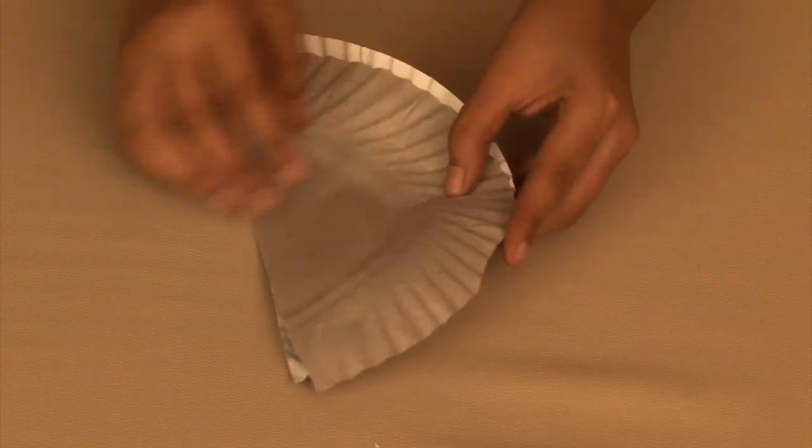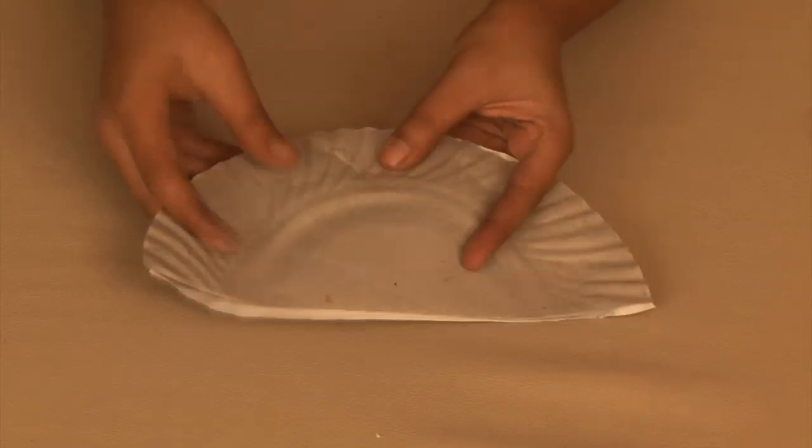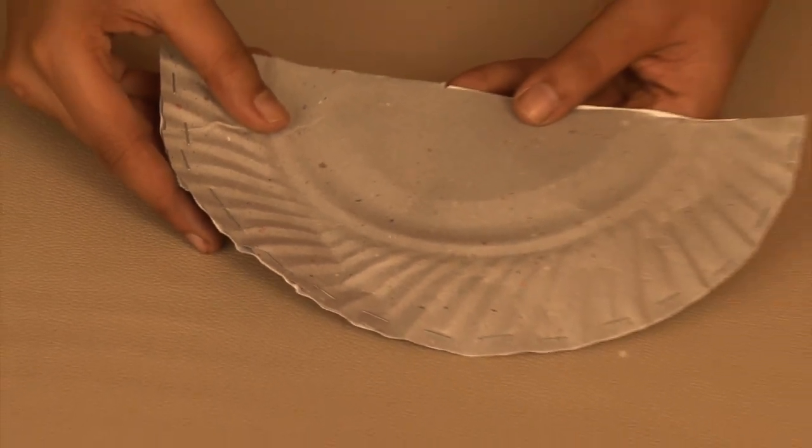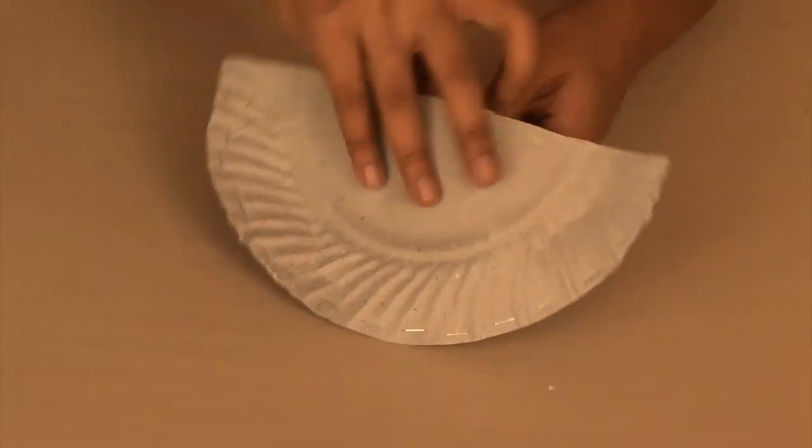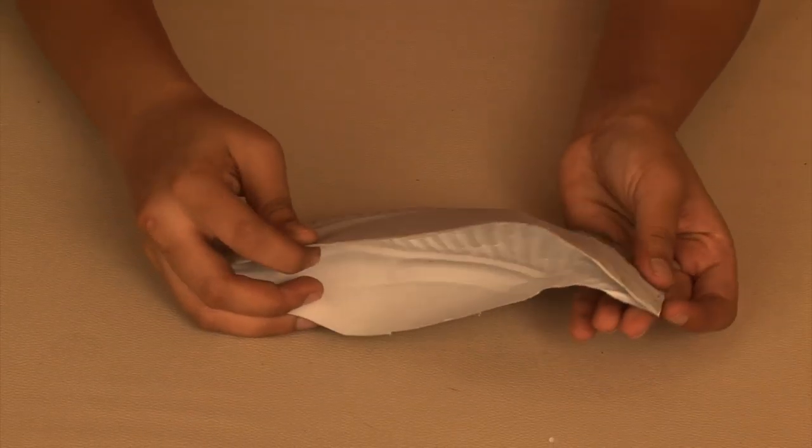Then lay the two pieces one on top of the other and staple along the curved end. You'll probably need to ask an adult to help you with the stapling. Once your two pieces are stapled together, you'll notice that a little pouch has formed. This is where the goodies will go.